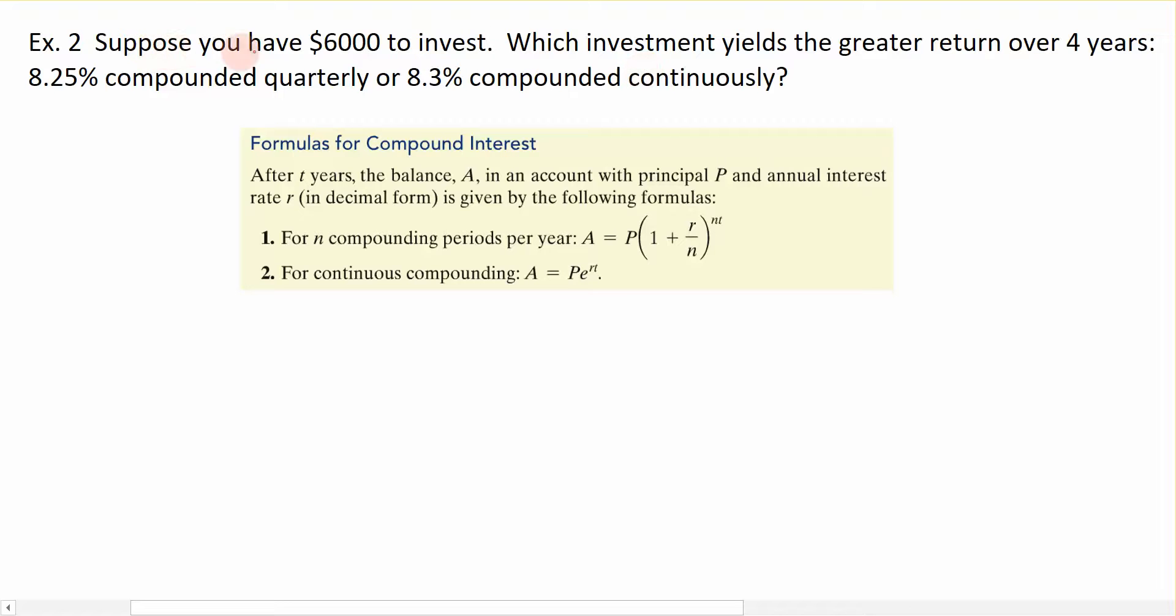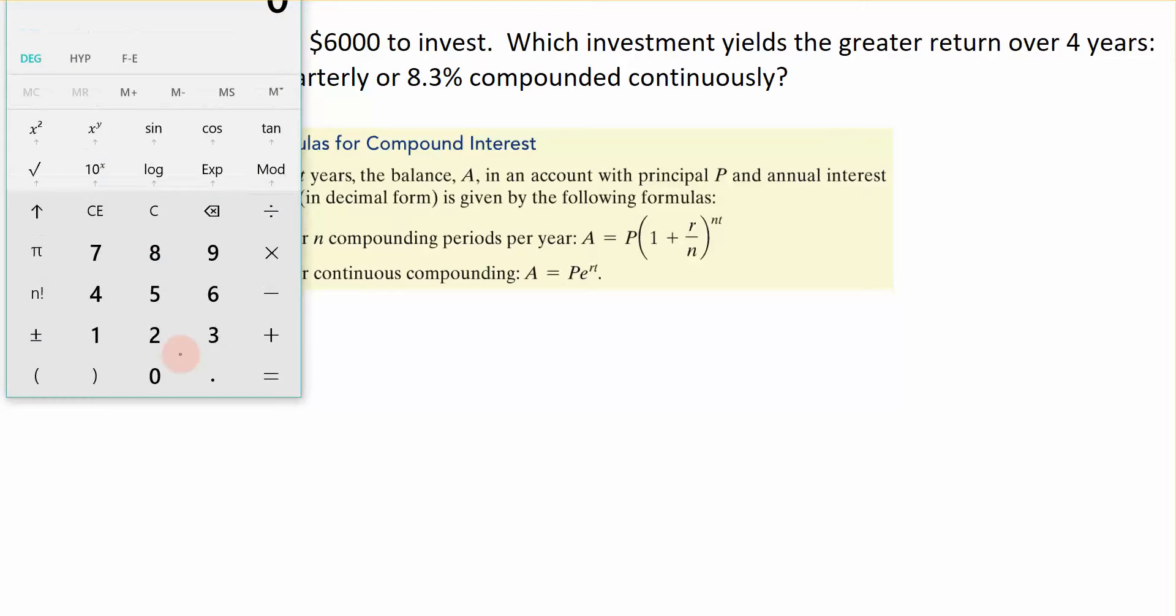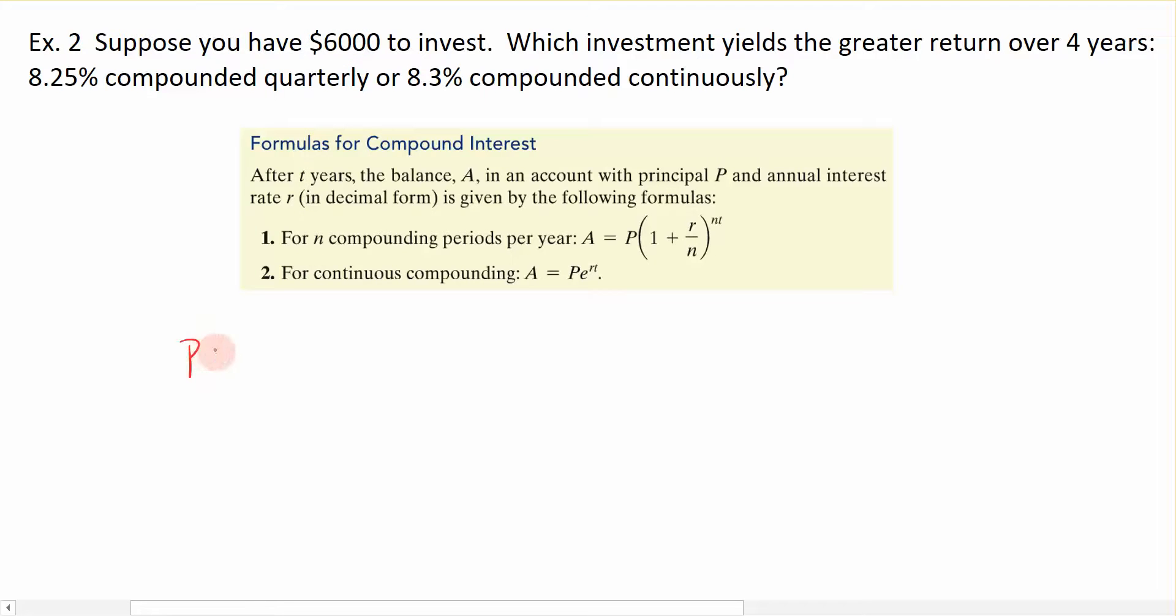It says suppose that you have $6,000 to invest. This is the principal investment and it is represented by the letter P, so P would be equal to $6,000. It says which investment yields the greater return over four years. This is represented by T, which is time. Time is always given in years, so we have four years.